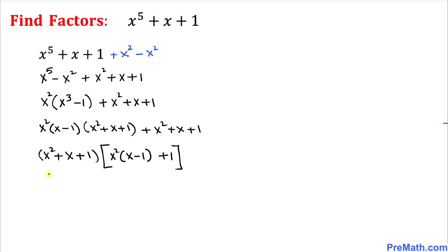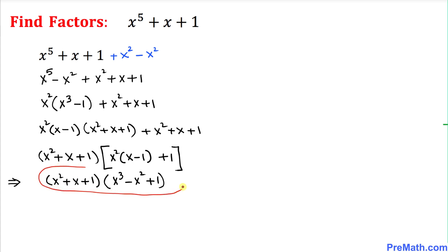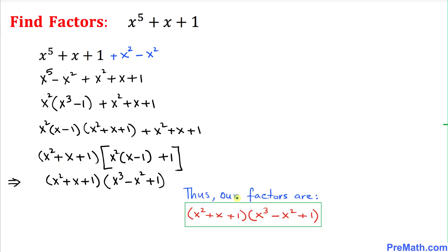We leave x² + x + 1 as it is, and distribute x² inside the parentheses to get x³ − x² + 1. These are our complete factors: the final answer is (x² + x + 1)(x³ − x² + 1).